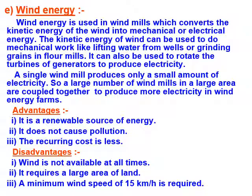Another source of energy is wind energy. Wind energy is used in windmills, which convert the kinetic energy of wind into mechanical or electrical energy. The kinetic energy of wind can be used to do mechanical work like lifting water from wells or grinding grains in flour mills. It can also be used to rotate the turbines of a generator to produce electricity. A single windmill produces only a small amount of electricity, so a large number of windmills in a large area are coupled together to produce more electricity.